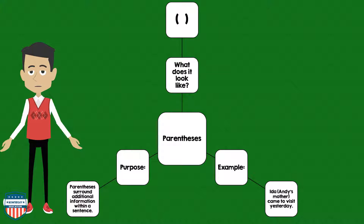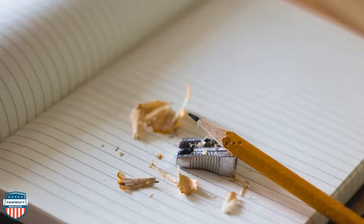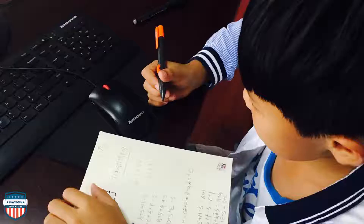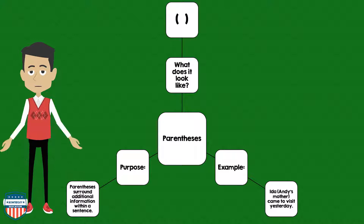Now, let's talk about the parentheses. Parentheses look like two brackets. An example of a parenthesis in use: Ida (Andy's mother) came to visit yesterday. The purpose of parentheses: they surround additional information within a sentence.